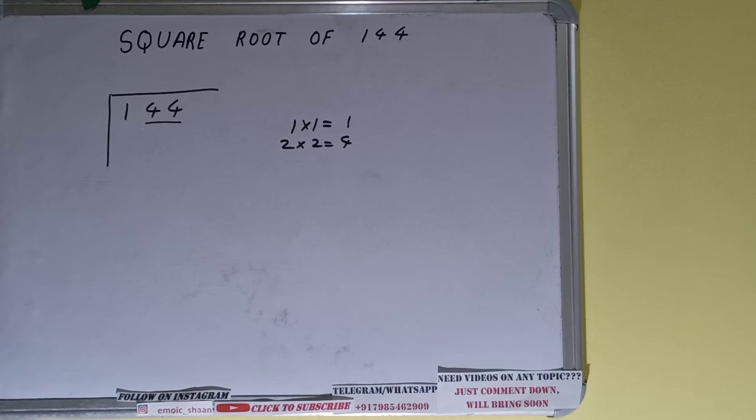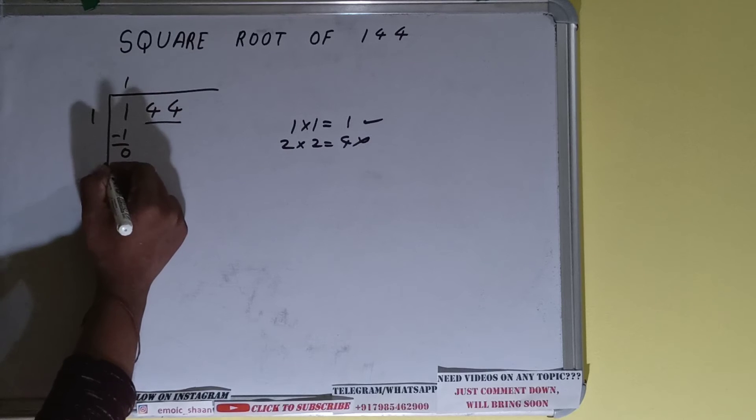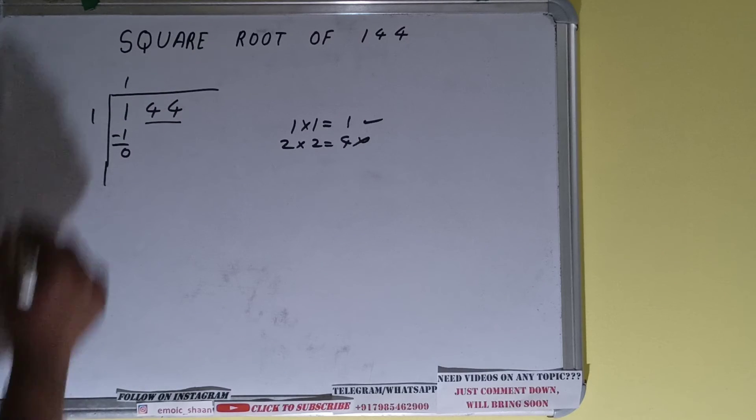So one here and one here—it will give one. Subtract, and we'll be left with zero. Now whatever is your divisor, added with what you multiplied with—we did one into one, right? So do one plus one, it will be two.